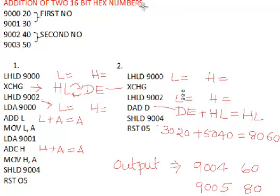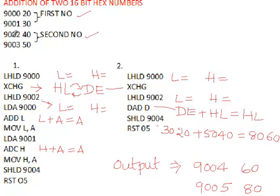We are performing the addition of two 16-bit hex numbers. The input is taken from locations 9000, 9001, 9002, and 9003. From 9000 and 9001 we get the first 16-bit number, which is 20 and 30. From 9002 and 9003 we get the second 16-bit number, which is 40 and 50. We want to add these two 16-bit numbers.